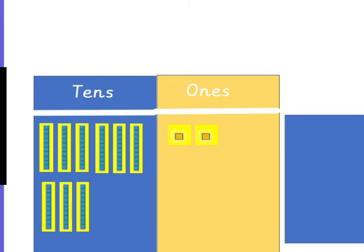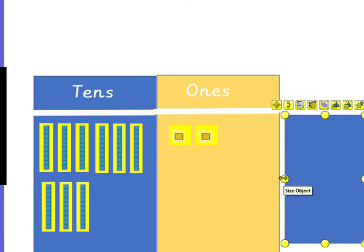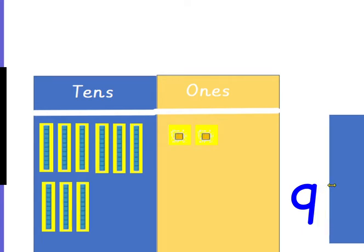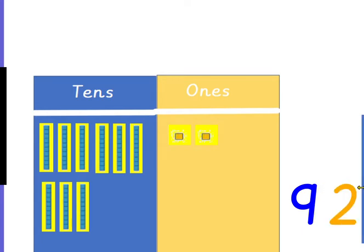What about this one? First you count your 10's, then you count your 1's. There's quite a lot of 10's there. We've got 1, 2, 3, 4, 5, 6, 7, 8, 9 tens and 1, 2 ones. What's that number? Shout it at me now. That's right — 92.